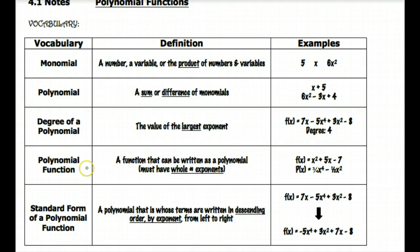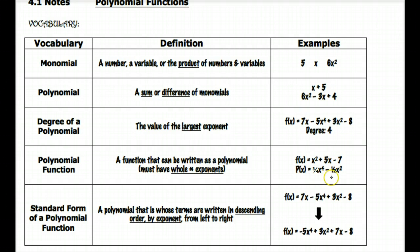A polynomial function is simply a function or equation that can be written as a polynomial, and the key there is your exponents have to be whole numbers. So f of x equals x squared plus five x minus seven is an example. Another example would be p of x equals three-fourths x to the fourth minus one-half x squared. Whole number exponents is what gives you a polynomial function.